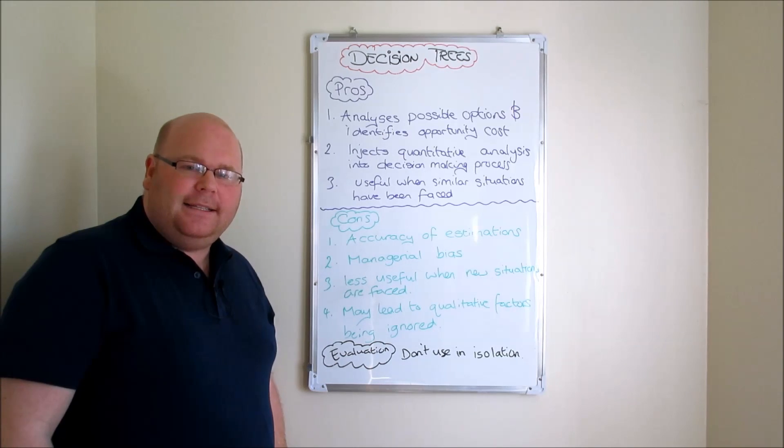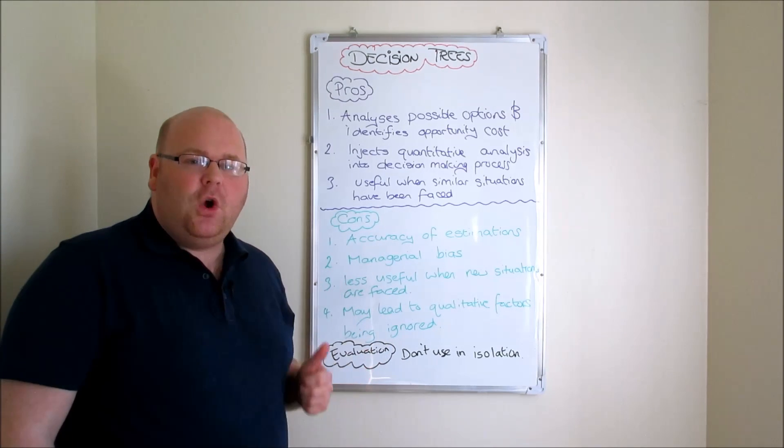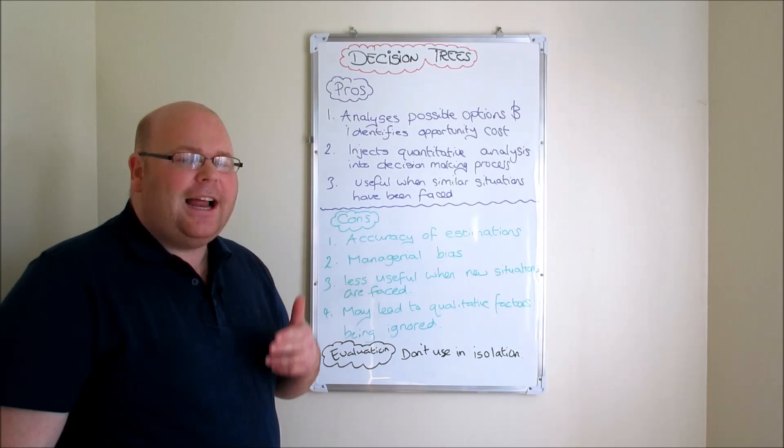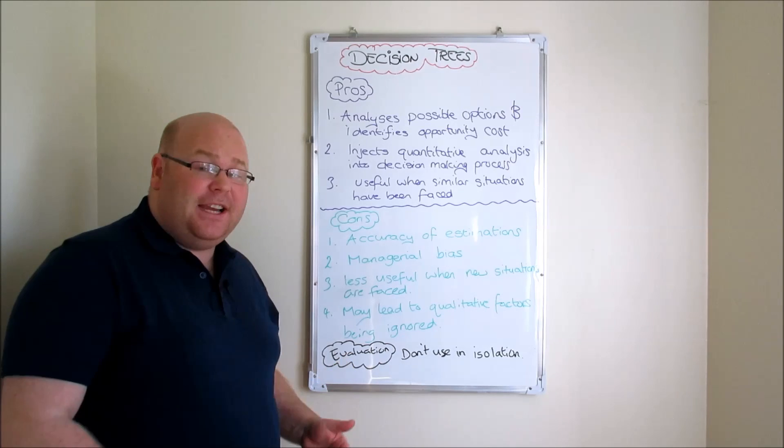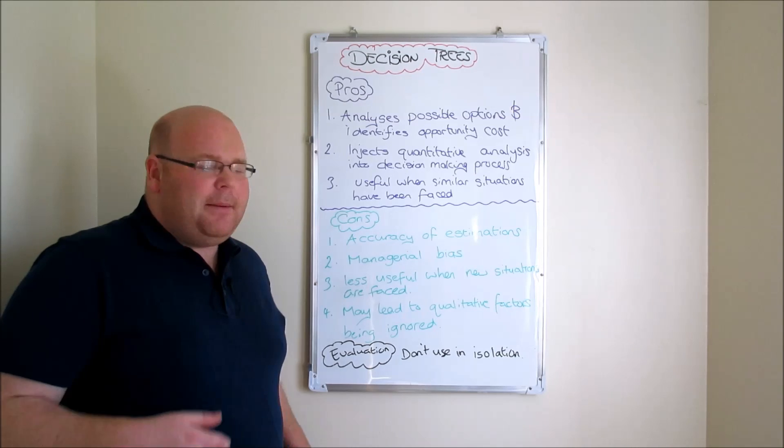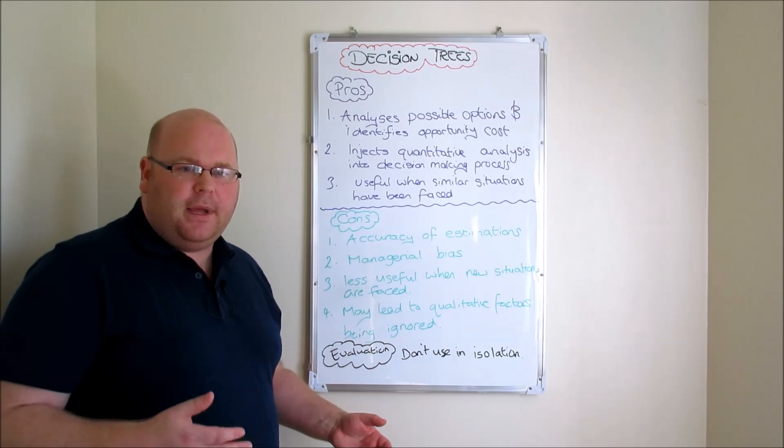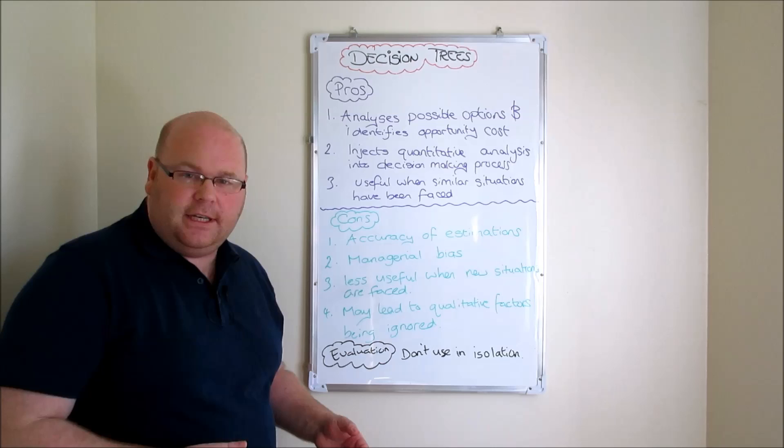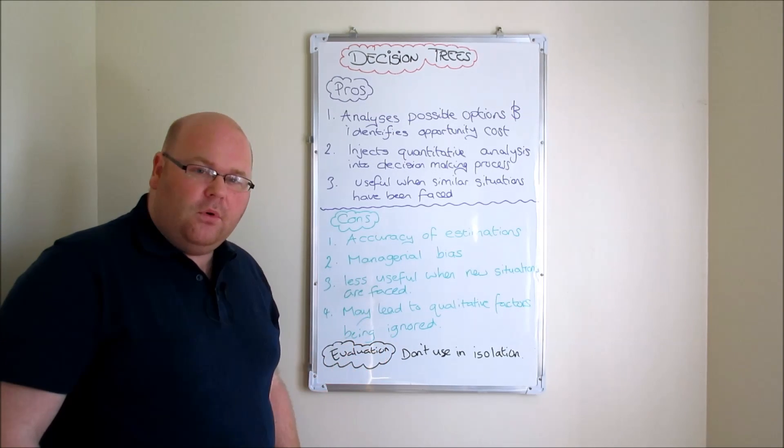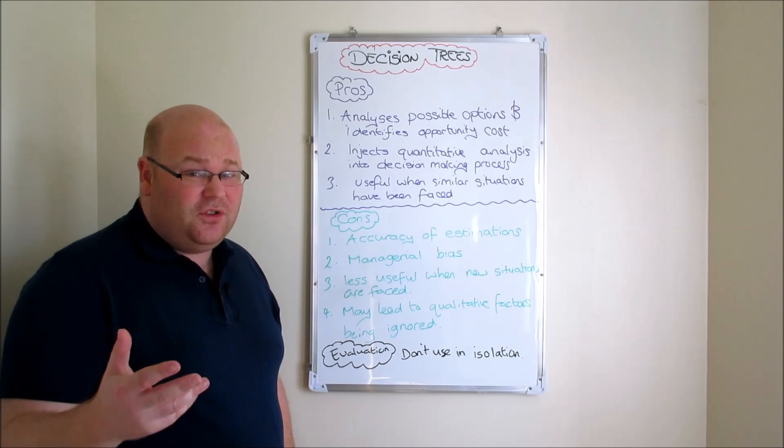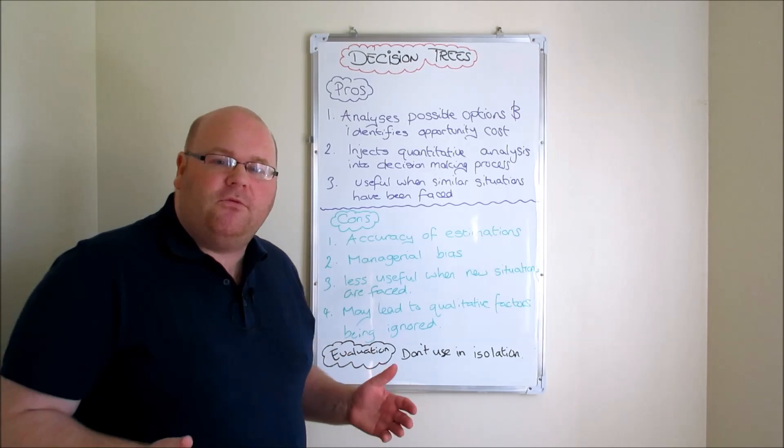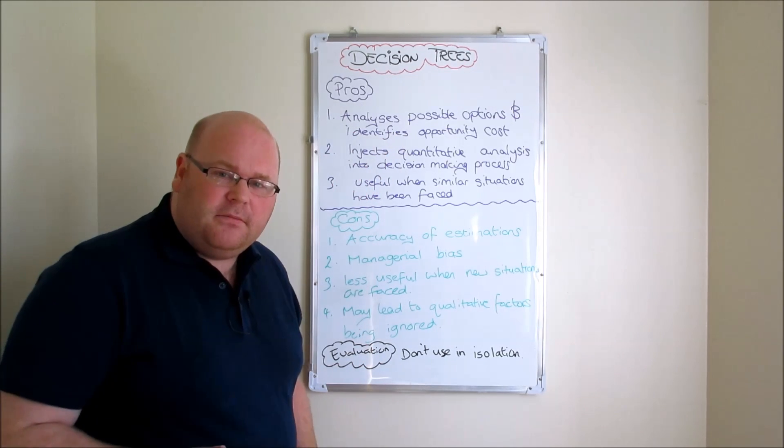And the final thing that we might just put in for a little bit of balance is that with decision trees, there are great quantitative decision making tools, but if they're used and qualitative bits of information are sidelined as a result - qualitative bits of information such as maybe how workers might respond to the different decisions that we're making, how trade unions might respond to different decisions that we're making - these kinds of qualitative factors are important as well. So if decision trees lead to the sidelining of qualitative factors, again it means the business can run into difficulties.